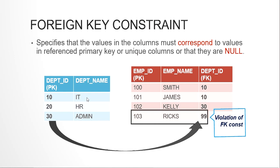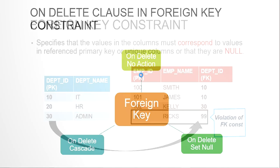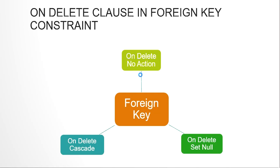This is a parent-child table relationship. The child table's column which is referencing another column cannot contain data other than what is present in the master table. So the department ID in the employees table cannot have any data other than null or what is present in the departments master table's department ID primary key.